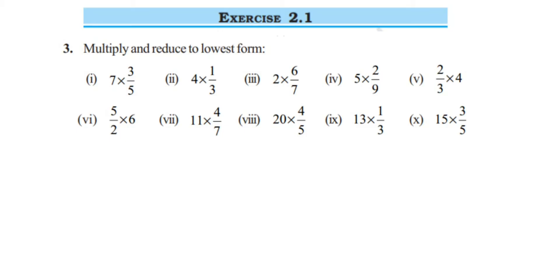Hello everyone, here is a question from Exercise 2.1, third question, chapter Fractions and Decimals of Class 7. The question says: multiply and reduce to lowest form. We have around 10 questions where we have to multiply and reduce. Reduce means we have to do the cancellation if possible and bring it to the lowest form. It's not necessary that every number can be cancelled.